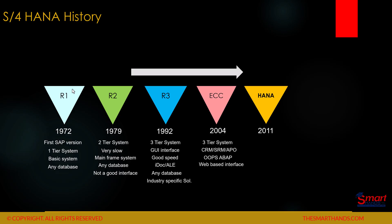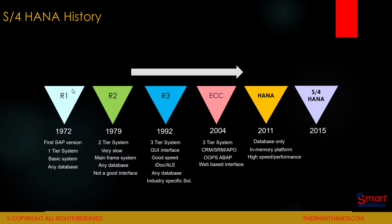In 2011 they launched the HANA database — just the database, not S4 HANA. It was an in-memory platform with very high speed and good performance. And finally in 2015 they launched S4 HANA, where the ABAP code was recoded, the data model was simplified, and it runs on the HANA database. They also launched Fiori apps, data footprint reduction, new functionality like MRP live, and the ability to do calculations on the fly.